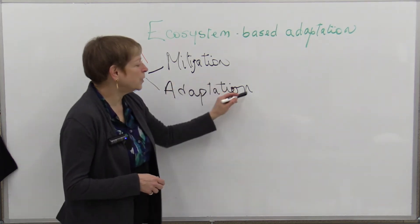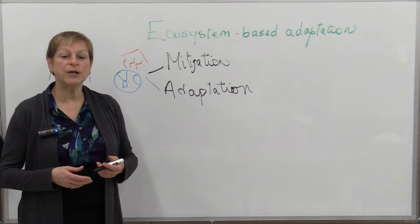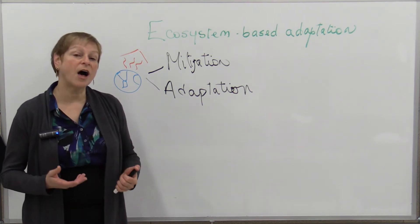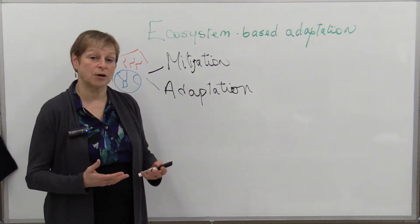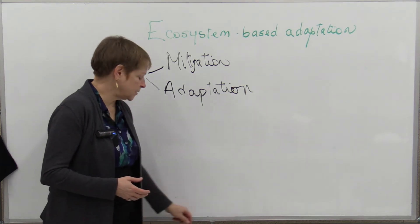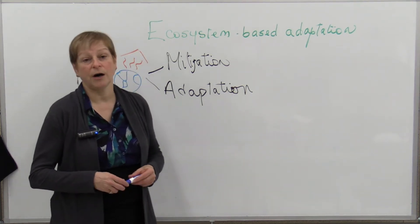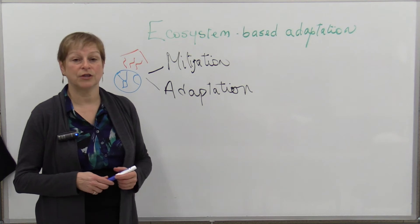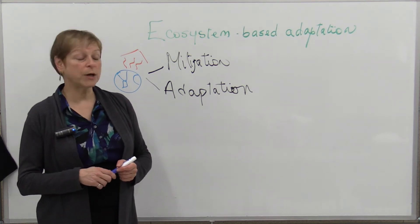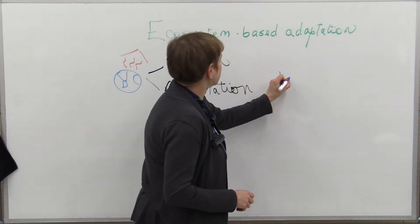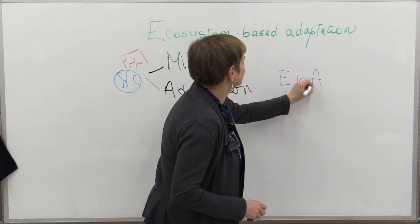So when we look at adaptation, we know that there are many types or many strategies that are possible. One that has been promoted, especially by the International Union for Conservation of Nature, is what we call ecosystem-based adaptation, or for short, EBA.